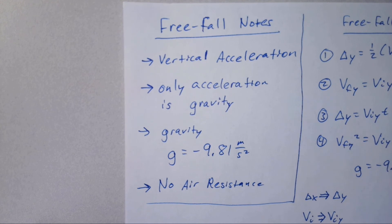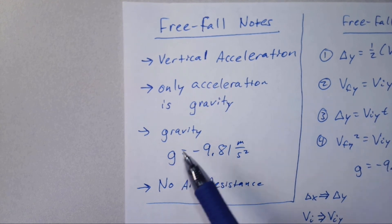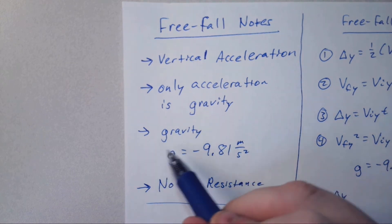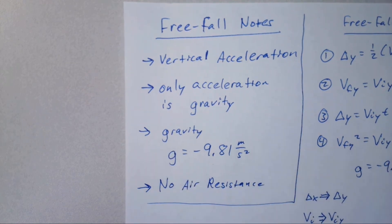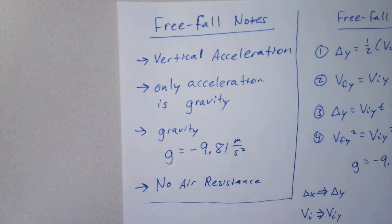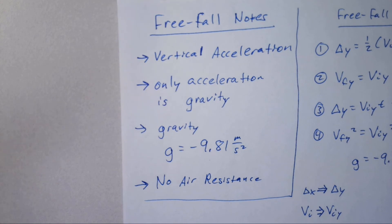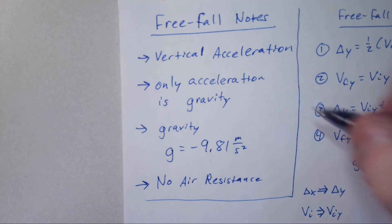The acceleration due to gravity is written as lowercase g in this class. Sometimes you may see a sub g, but we use g, and it equals negative 9.81 meters per second squared. Sometimes it's written as 9.8, sometimes 9.81. I like using 9.81.